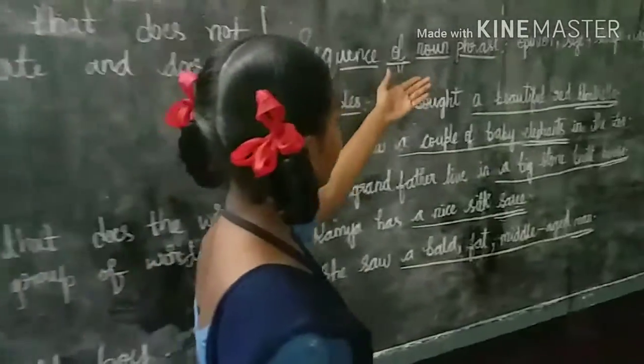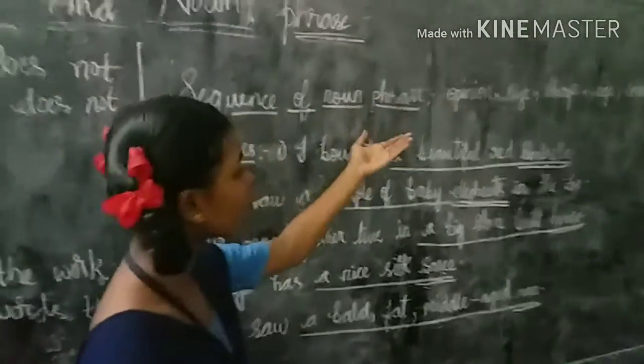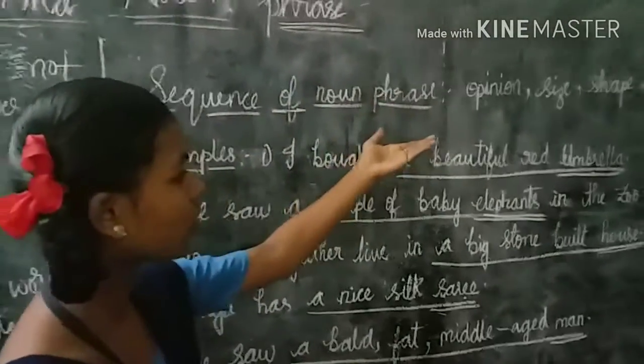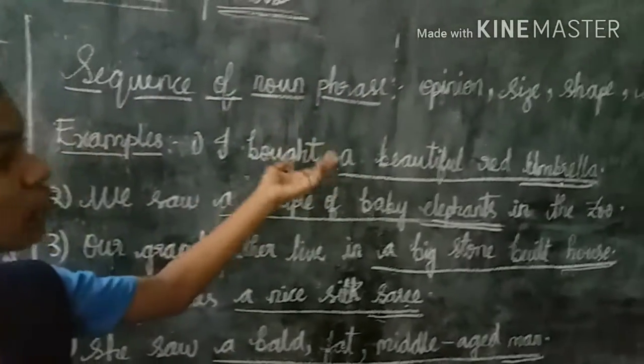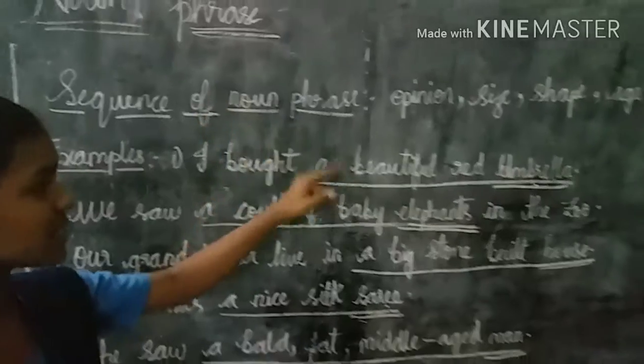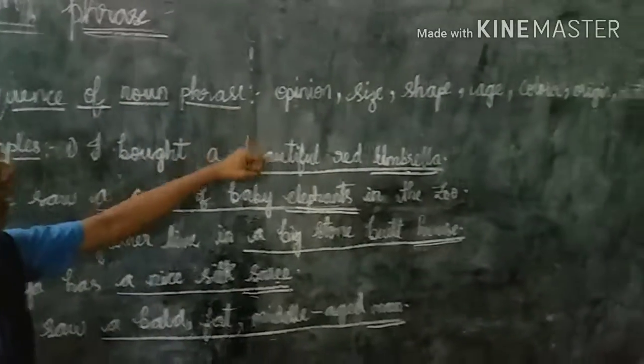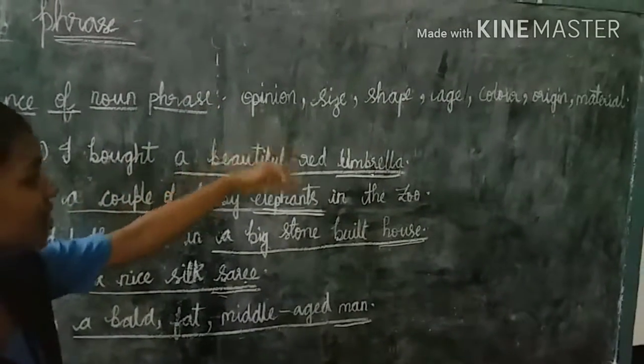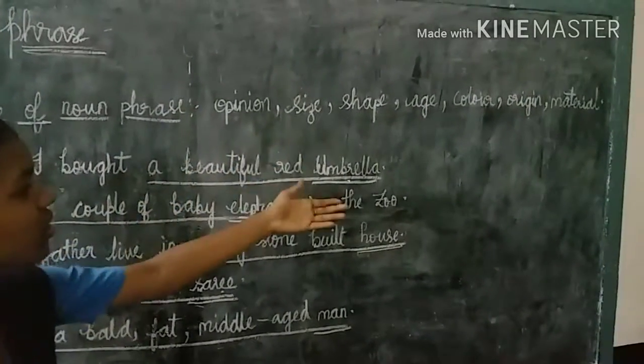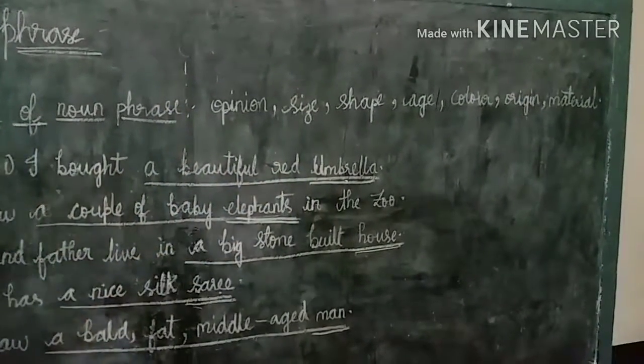Structure of noun phrase. We have to follow this order when we find two adjectives for a single noun: opinion, size, shape, age, color, origin, material.